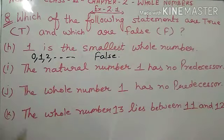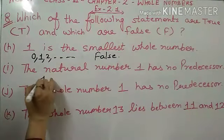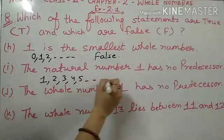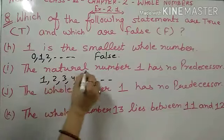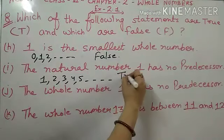Now i part: 'The natural number one has no predecessor.' Natural number one ka koi predecessor nahi hoota. Bachoh, natural numbers shuru hoota hai one se — 1, 2, 3, 4, 5. So natural number one ka koi predecessor nahi hoota. Toh yah statement true hai. Kyunki iske aaghe koi number nahi hoota, because natural numbers shuru hoota hai one se. So this statement is true.